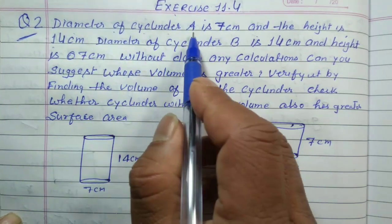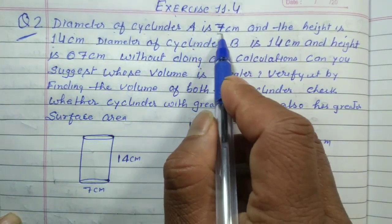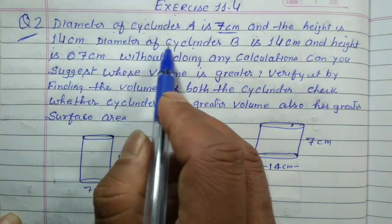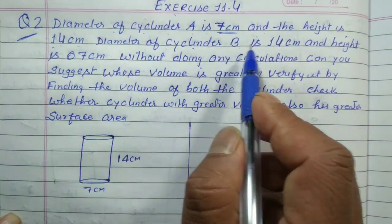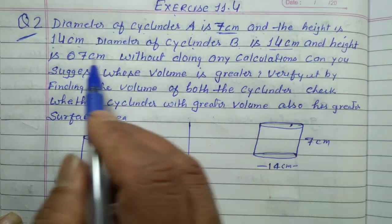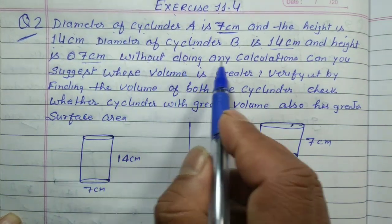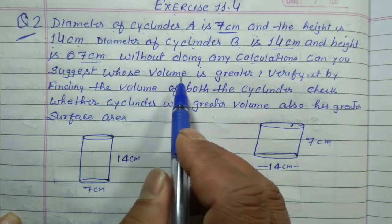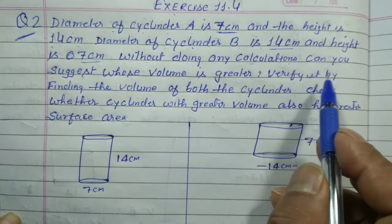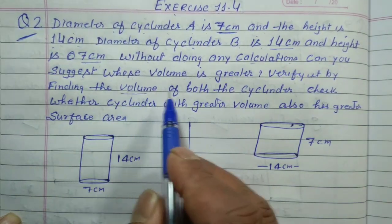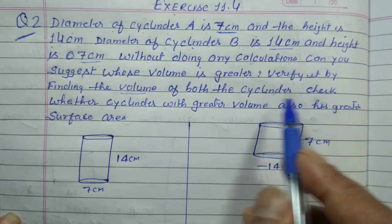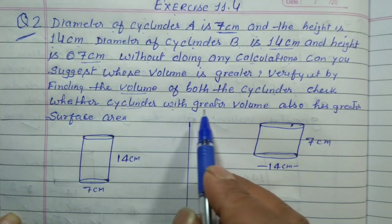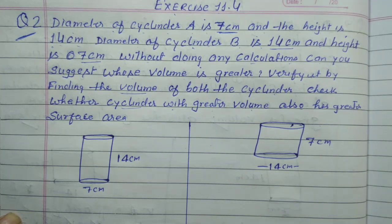Diameter of cylinder A is 7 cm and the height is 14 cm. Diameter of cylinder B is 14 cm and height 7 cm. Without doing any calculations, can you suggest whose volume is greater? Verify it by finding the volume of both cylinders. Also check whether the cylinder with greater volume also has greater surface area.